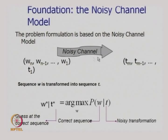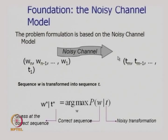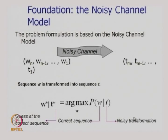Looking at the figure, on the input side of the channel there is a sequence w1 to wn, which becomes another sequence t1 to tm. So the sequence w is transformed into the sequence t. One could find the best possible w-star given t, or find the best possible t-star given w. Note the use of a function here called argmax. Let us understand this argmax function.